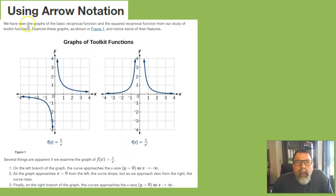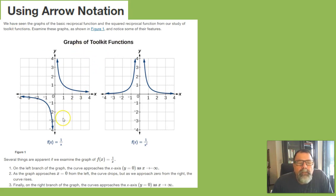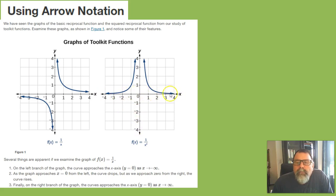Using arrow notation. We have seen the graphs of basic reciprocal functions and the square reciprocal function from our study of toolkit functions. The reciprocal function has a vertical asymptote at the y-axis and a horizontal asymptote at the x-axis. Same thing for the squared reciprocal function — a vertical asymptote at the y-axis and a horizontal asymptote at the x-axis.